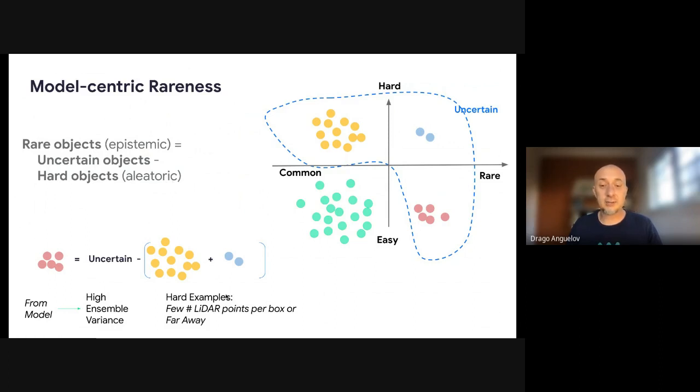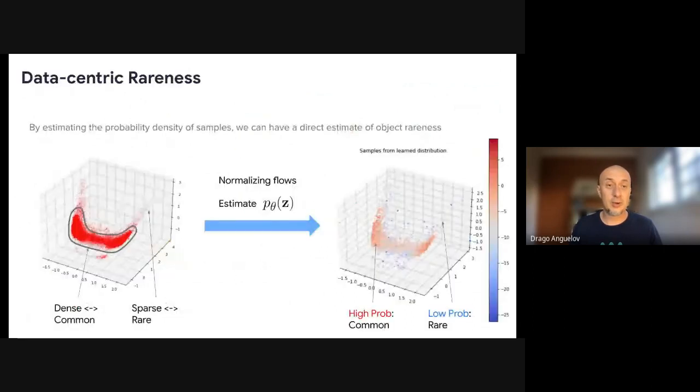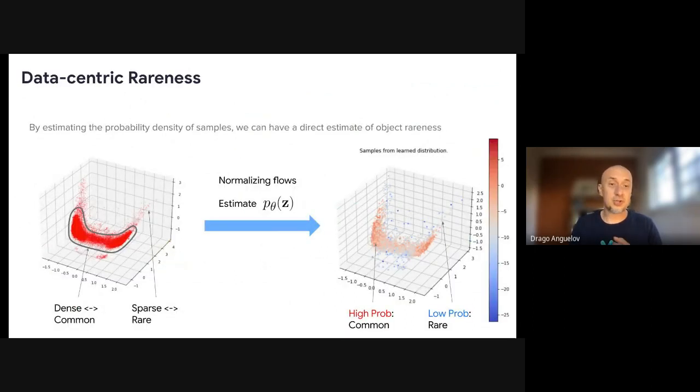But you want to remove the hard objects. And hard, if you have a reasonable definition of hard, in our case we can say, well, too few lidar points or object is maybe too far away, then you get your definition of rare. Now this model-centric rareness works whenever you have some domain knowledge or understanding of what might be hard, but often that knowledge is limited, right? So maybe there are some other examples that are common that we cannot enumerate here in a natural way. So we have an alternative definition of rareness, which is called data-centric rareness.